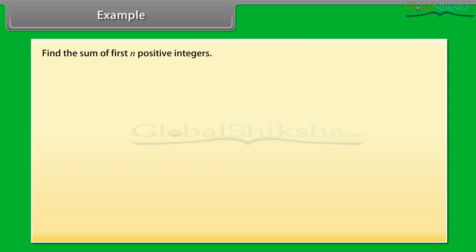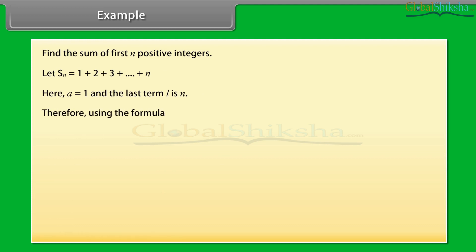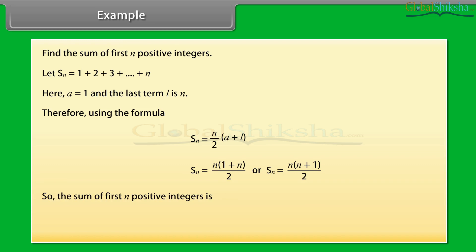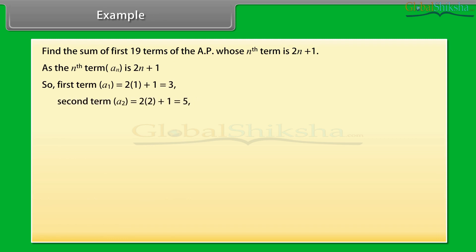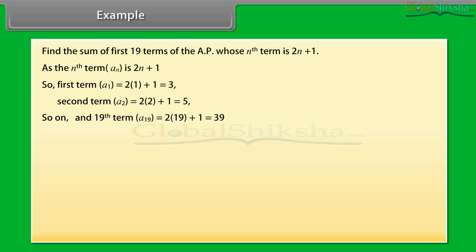Find the sum of first N positive integers. Let SN = 1 + 2 + 3 + ... + N, where A = 1 and the last term L = N. Using SN = N/2 × (A + L), we get SN = N × (1 + N) / 2 = N(N+1)/2. Next example: Find the sum of first 19 terms of the AP whose Nth term is 2N + 1. So A1 = 2(1)+1 = 3, A2 = 2(2)+1 = 5, and the 19th term = 2(19)+1 = 39.